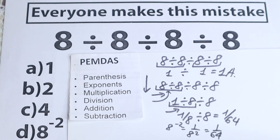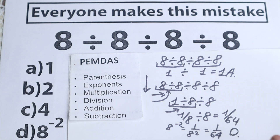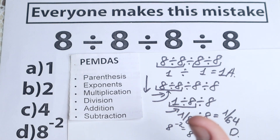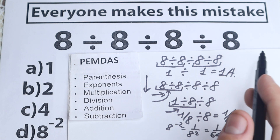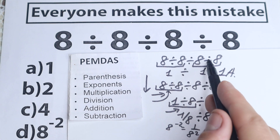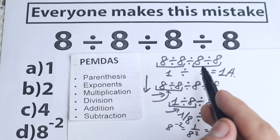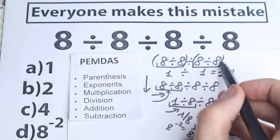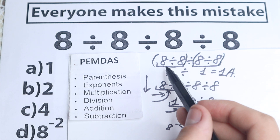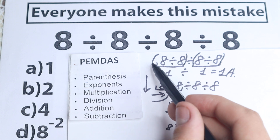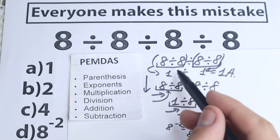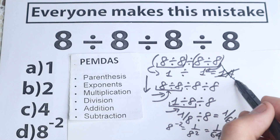Looking at our options, option D is the correct answer, because 8 to the power of negative 2 equals 1 over 8 squared, which is 1 over 64. Now, why is the earlier solution incorrect? Because we cannot jump around left to right — dividing here, then over there, then on the right. However, if we had put parentheses around parts of the expression, then option A would actually be correct. But since there are no parentheses here, that solution is incorrect.